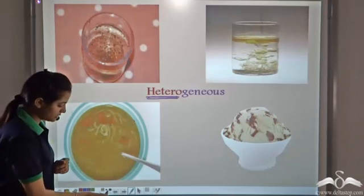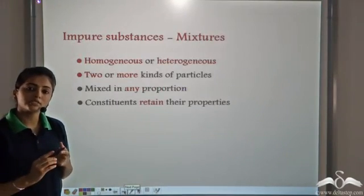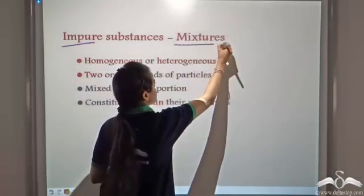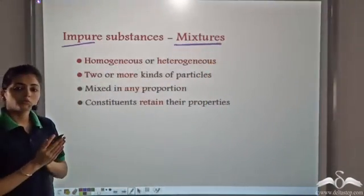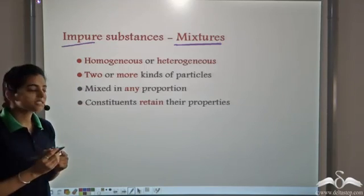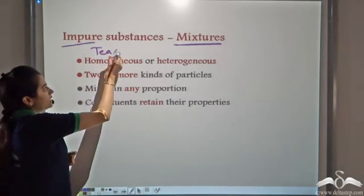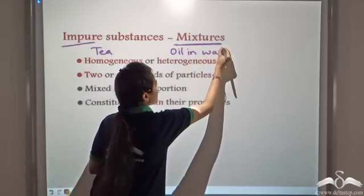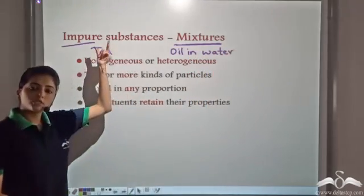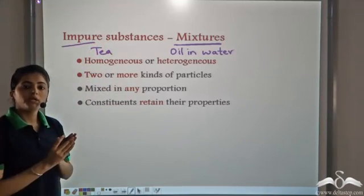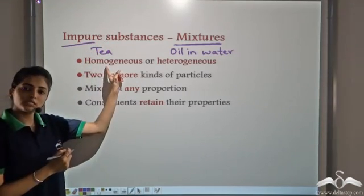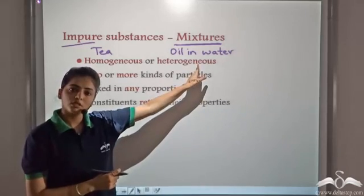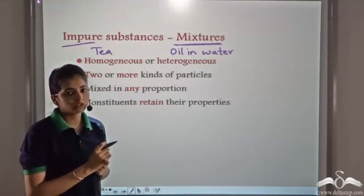So we have a category of substances which are known as impure substances, and these impure substances are known as mixtures. What are mixtures or impure substances? Let's take two examples: tea and oil dissolved in water. In case of tea, we have more than one kind of particles but it looks the same throughout, therefore it is homogeneous. Oil dissolved in water — we are able to make out the difference, so this is heterogeneous. So mixtures can be homogeneous or heterogeneous.